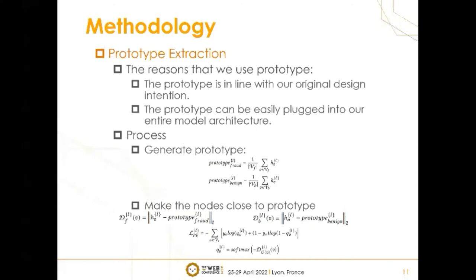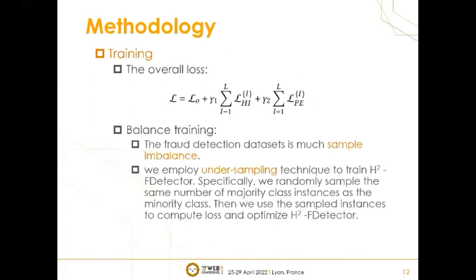The process of prototype tracking is detailed in the slides. In the end, we take the output of our last layer as the final embedding of nodes and use cross-entropy as our classification loss. The final loss is a combination of three losses. It is worth noting that to reduce the influence of sample imbalance, we employ an undersampling technique to train the H2F Detector. The specific process of undersampling is shown in the slides.